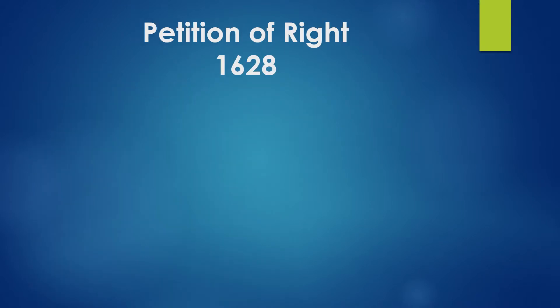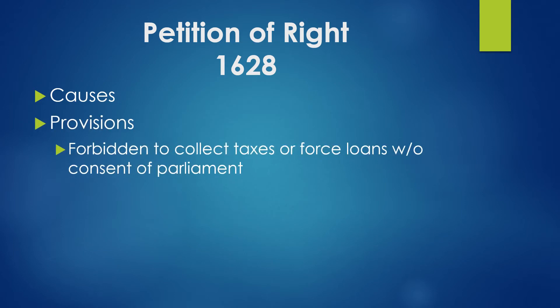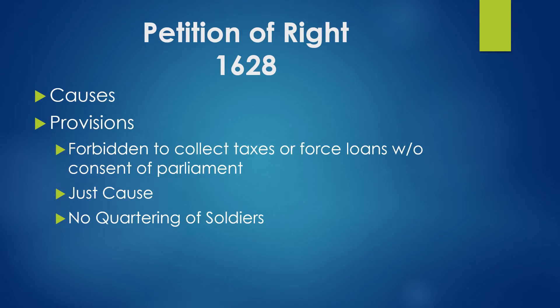In 1628, Charles I was forced to call Parliament into session. He had been fighting a war, needed more money, and had been raising money illegally. Parliament said they wouldn't deal with him until he addressed their issues, and they forced him to sign the Petition of Right. Its provisions included: the king was forbidden to collect taxes or forced loans without Parliament's consent; he could not arrest or imprison opponents without just cause; there would be no quartering of soldiers in private homes; and no military law unless England itself was at war. Because he needed money, Charles signed the Petition of Right.